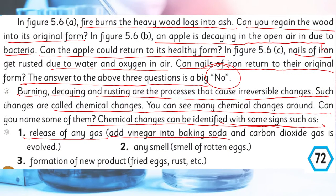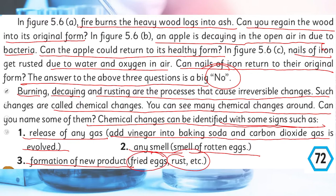Signs of a chemical change include: release of any gas — for example, add vinegar into baking soda and carbon dioxide gas is evolved; any smell, like the smell of rotten eggs; and formation of a new product — like fried eggs or rust.